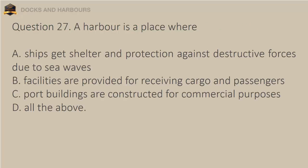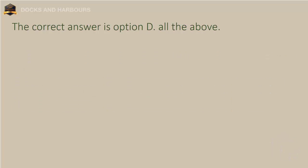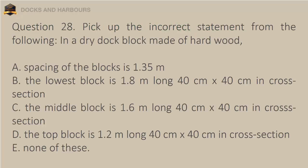Question 27. A harbor is a place where: A. Ships get shelter and protection against destructive forces due to sea waves. B. Facilities are provided for receiving cargo and passengers. C. Port buildings are constructed for commercial purposes. D. All the above. The correct answer is option D: All the above.